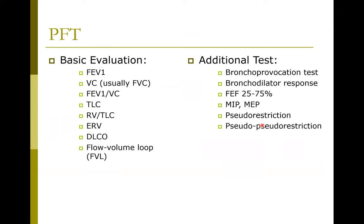Back to more basic discussion about PFTs. Most PFT evaluations include FEV1, vital capacity (usually forced vital capacity), FEV1 over VC or FEV1 over FVC, TLC, RV over TLC, ERV (expiratory reserve volume), DLCO, and flow volume. Additional tests look for bronchodilator response, FEF25-75 — though the importance of FEF25-75 has been greatly deemphasized — and a few other things I won't cover today, as I want to stay within the framework of basic PFT evaluation.